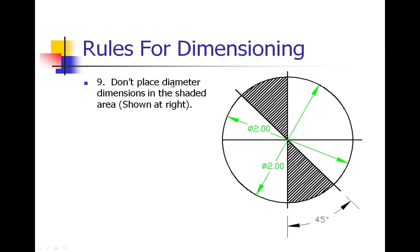Number nine: don't place diameter dimensions in the shaded area. If we have a part that has a shaded area, you don't want your dimension to be on top of that area because it would be very difficult to read. It may be better to actually do a diameter measurement coming off the side of the circle rather than right on top. Even with this 45 degrees, we don't want that inside on top of this shaded area because it would be too hard to read.